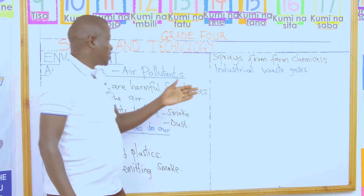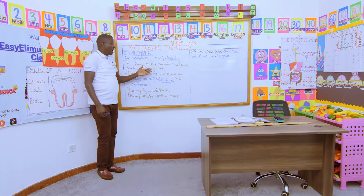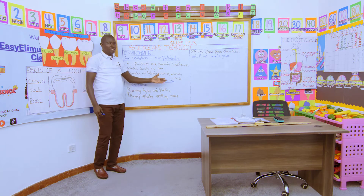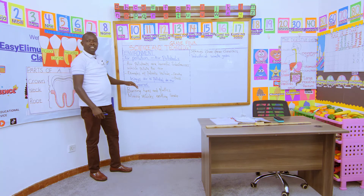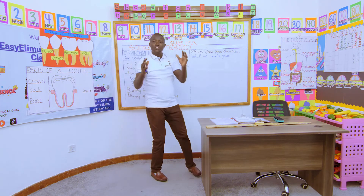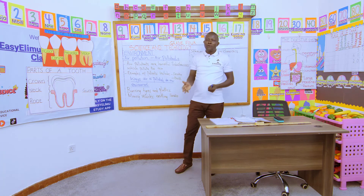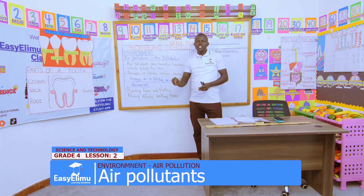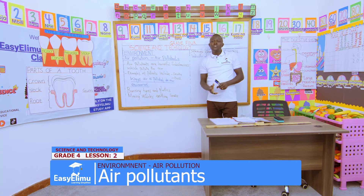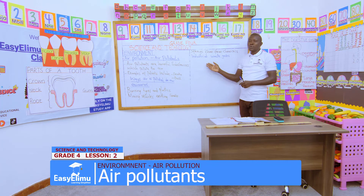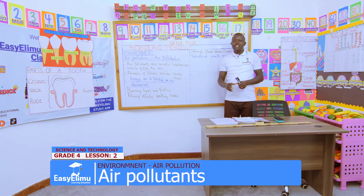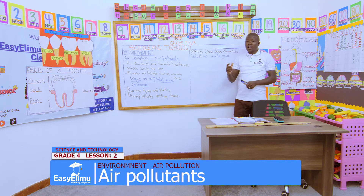Air pollutants are harmful substances which pollute the air around us. Examples include smoke and dust, among others. Some of the ways we see air being polluted in our environment include dust blown by wind affecting visibility, smoke from kitchen firewood, and gases from industries producing a lot of smoke. These are just some examples of ways air around us is being polluted.